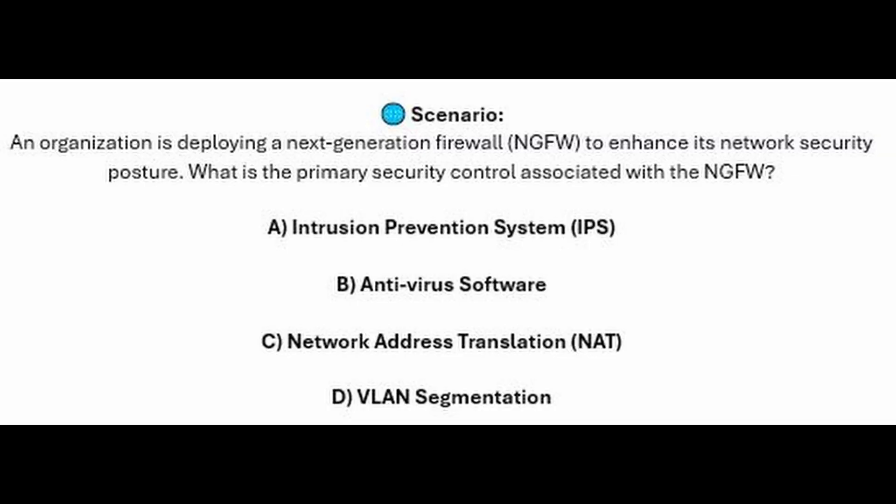And now for incorrect answers. A policy engine dynamically adjusts access policies, but is not the primary control associated with adaptive authentication. Threat scope reduction involves minimizing the potential impact of a security incident, but it's not the primary control emphasized in the context of adaptive authentication. And policy-driven access control is essential, but it's not the primary control highlighted in the context of adaptive authentication.